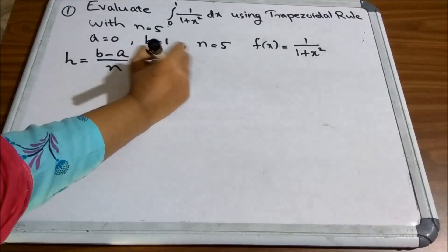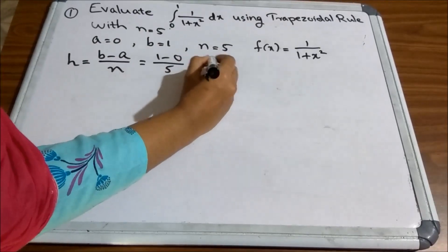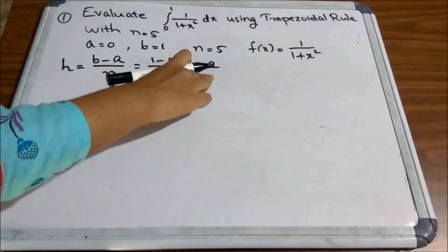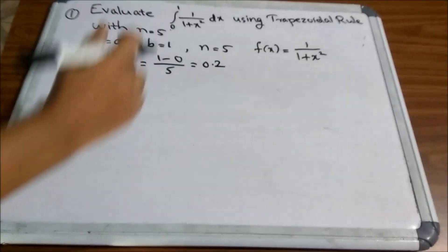So, 1 minus 0 by 5, 1 by 5 which is equal to 0.2. So, each subinterval will be of width 0.2 from 0 to 1.